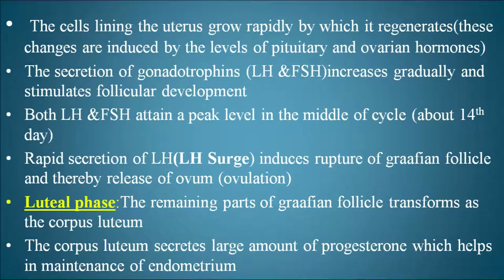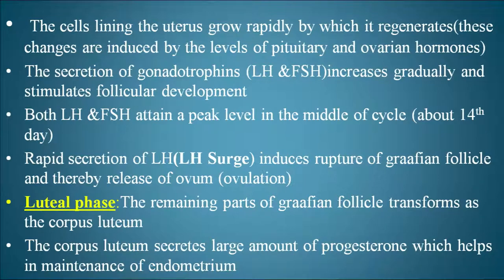Both LH and FSH attain a peak level in the middle of the cycle at about 14 days, which is the halfway point of the cycle. Rapid secretion of LH — also called the LH surge — induces rupture of the Graafian follicle and thereby release of the ovum, which is called ovulation.